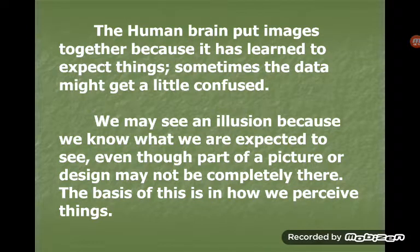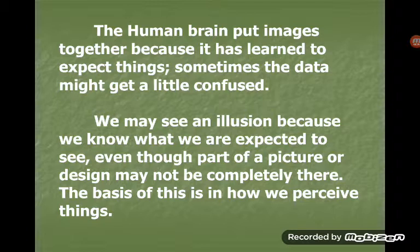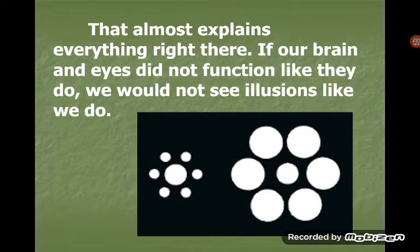The human brain puts images together because it has learnt to expect things. Sometimes the brain might get a little confused. We may see an illusion because we know what we are expected to see. Even though part of a picture or design may not be completely there, the basis of this is in how we perceive things. If our brain and eyes did not function like they do, we would not see illusions like we do.